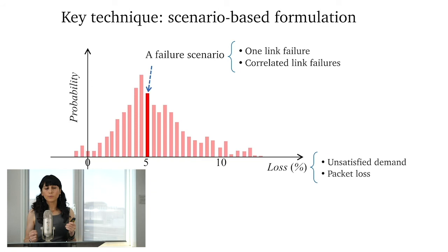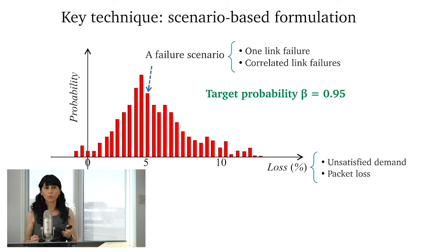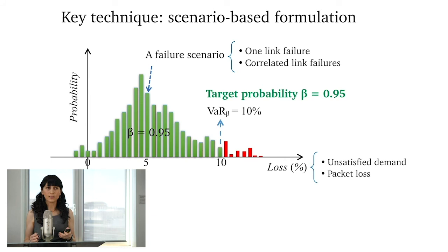And if I put all the failure scenarios together in a graph, by having a target probability of, say, 0.95%, the area under the curve, when it hits 0.95%, finds a value at risk where it means that the probability of loss is less than 10% in this example, with probability, the loss will be less than 10% with a given probability. In this case, beta equals 0.95.